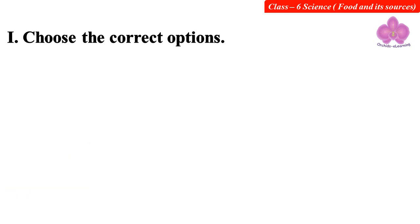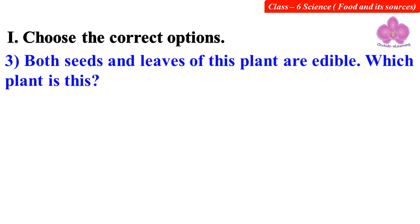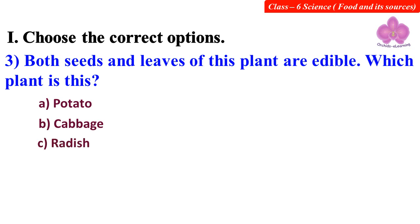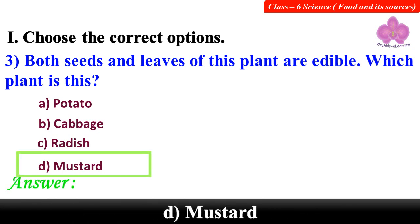Both seeds and leaves of this plant are edible. Which plant is this? Option A: Potato. Option B: Cabbage. Option C: Radish. Option D: Mustard. Answer: D. Mustard.